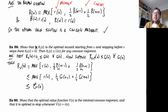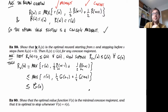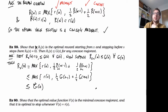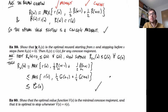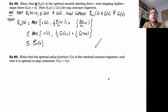Since it's true at step zero, and true at step s-1 implies true at step s, by induction R^s(x) ≤ g(x) holds for all s and for any concave majorant g. In other words, the optimal reward function for stopping over any number of steps is bounded above by any concave majorant.